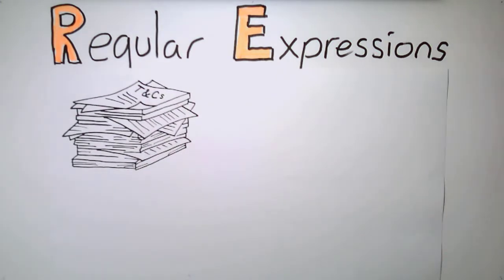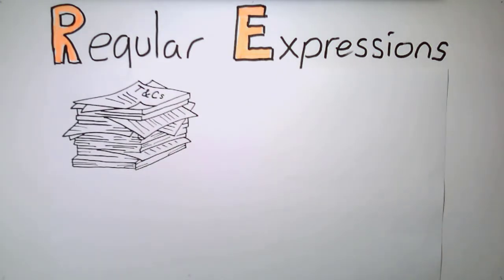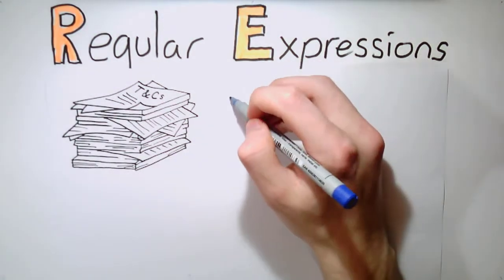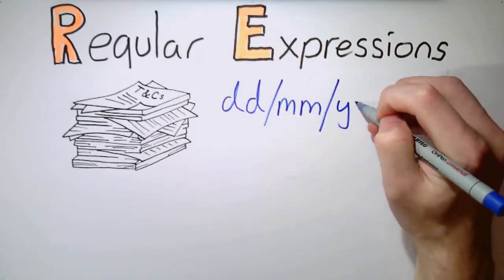Say we want to search these terms and conditions for important dates. For simplicity, we'll only worry about numerical dates. There are only a few different formats we can expect dates to be in, right? We just search for dd/mm/yy.